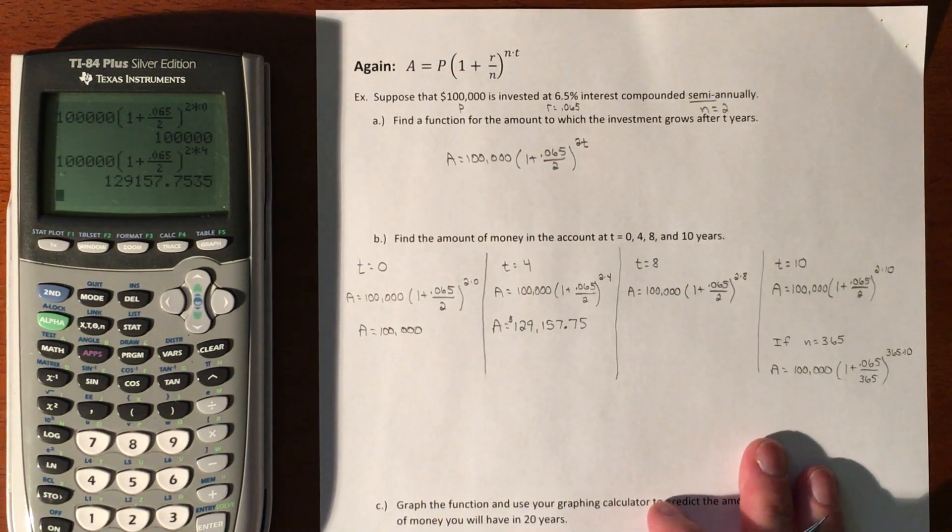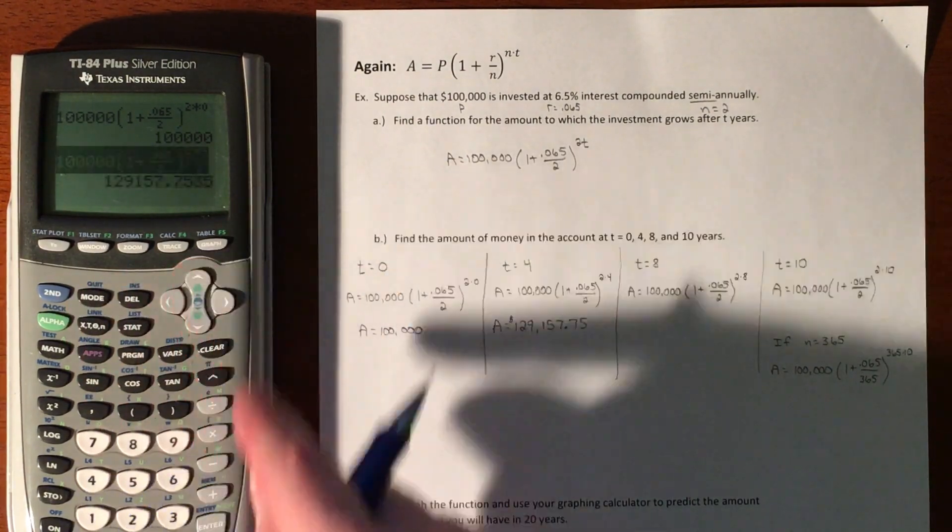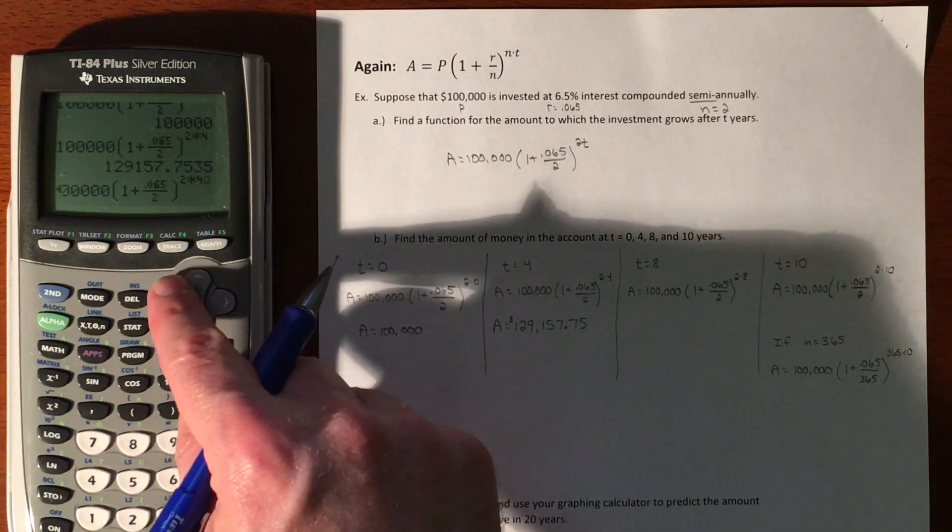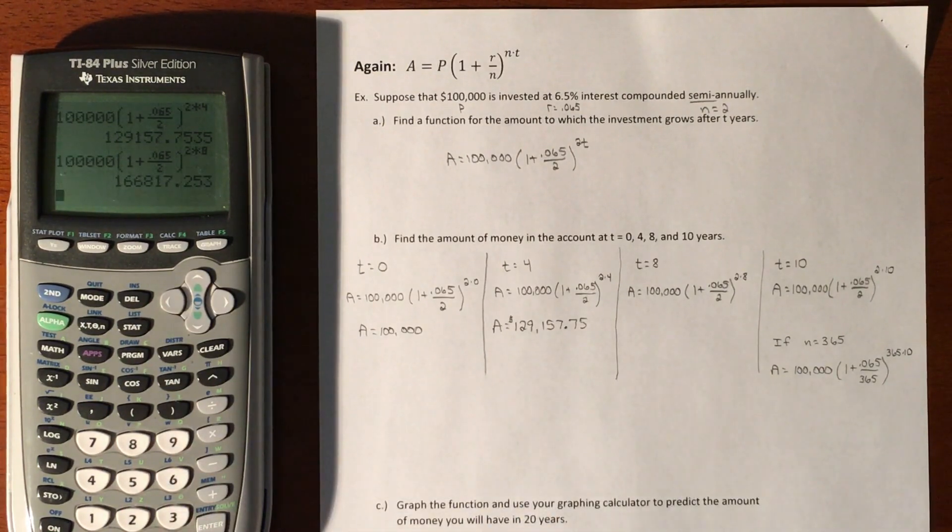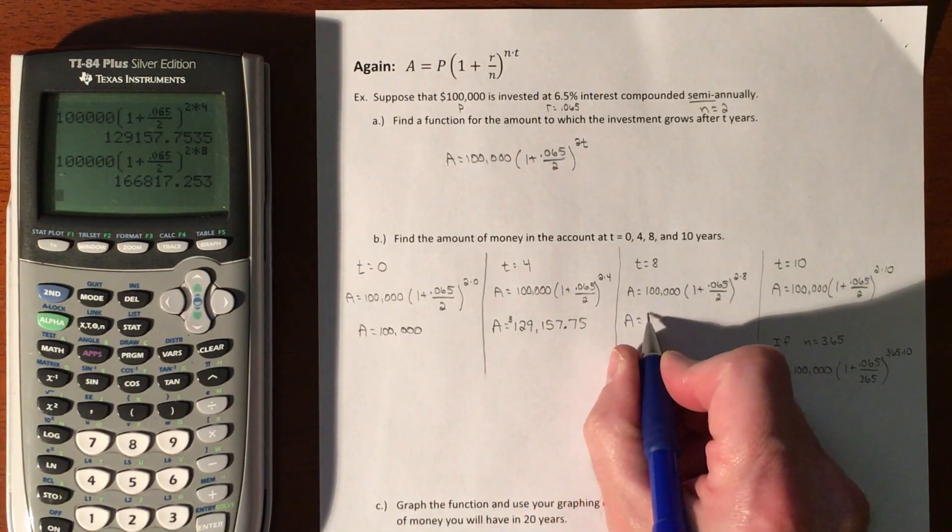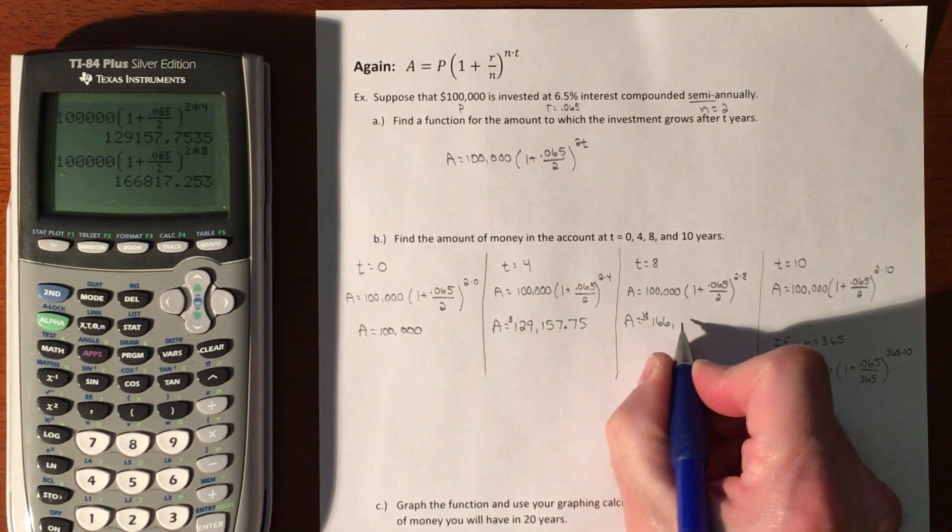If we did the next one, we'll just go back and make this an eight. We're doubling the amount of time, but because it's compounding, we are not doubling the end result.